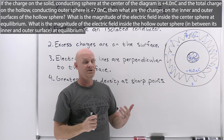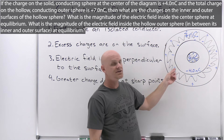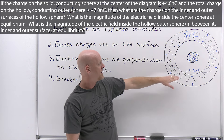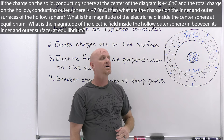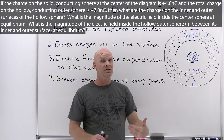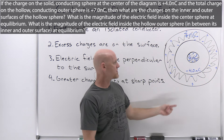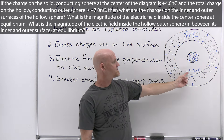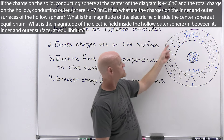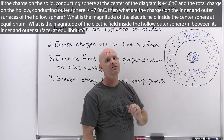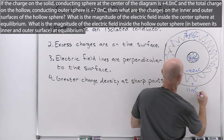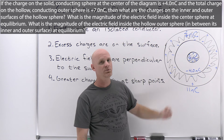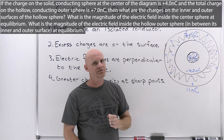Conservation of charge applies here. These two conducting surfaces are not in contact, so there's no transfer of charge. We started with 7 nanocoulombs of positive charge total on the outer hollow sphere, so there's still 7 nanocoulombs total on it. The charge is either on the inner or outer surface. If there's negative 4 nanocoulombs on the inner surface and the total charge is still 7 nanocoulombs, then there must be 11 nanocoulombs on the outer surface — positive 11 plus negative 4 equals positive 7.